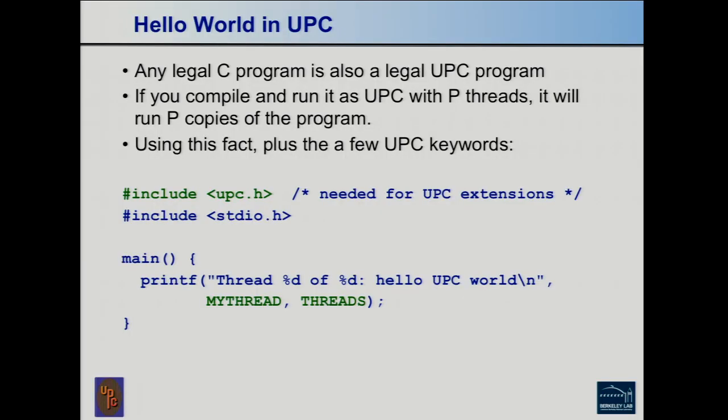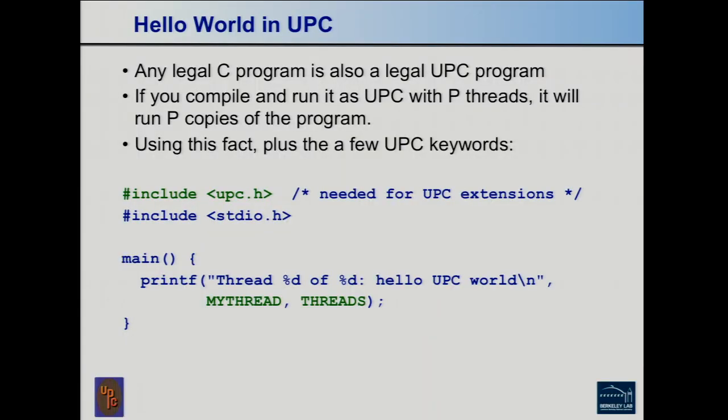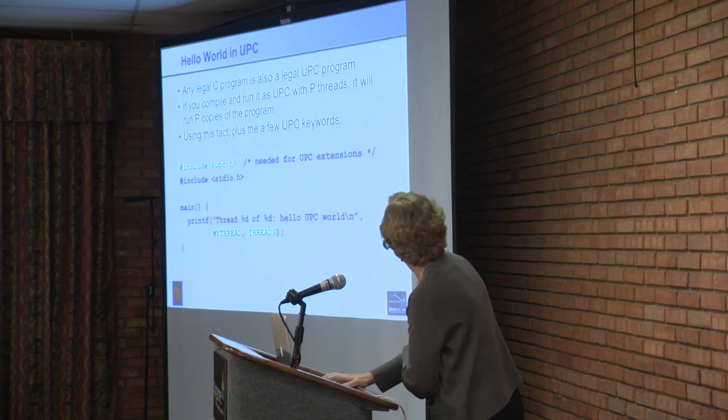I'm now going to do a UPC tutorial for about 10 or 15 minutes. The first thing you should know is that any C program is a legal UPC program. If you compile it and run it, it'll just run P copies of it. So it's a single program, multiple data model — similar to the traditional style of an MPI application. In UPC, main doesn't run on a single process; it runs on all of them simultaneously. So hello world is just going to print out hello from every one of the threads together.